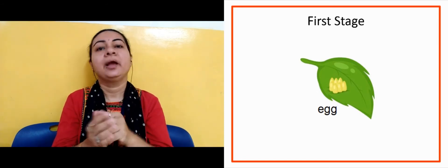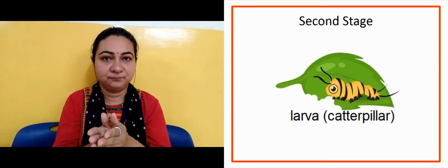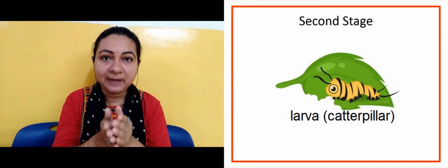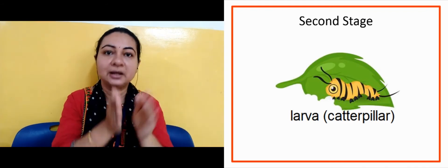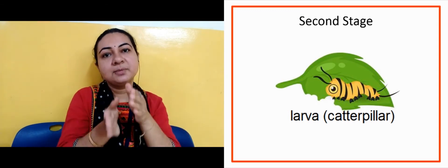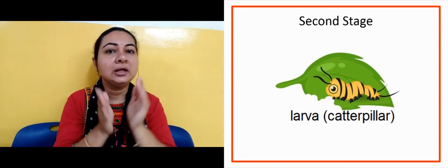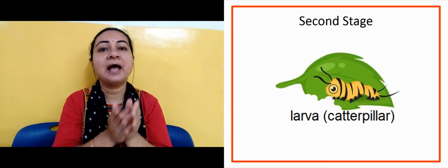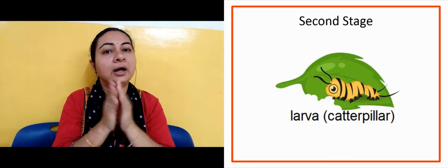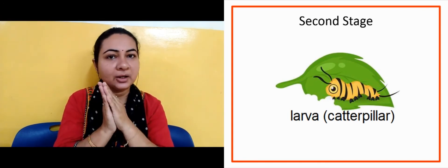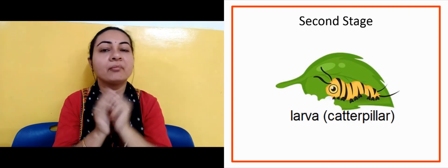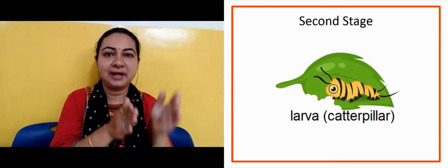The second stage — when the egg hatches, what comes out? It is the larva, also called a caterpillar. So the second stage is larva or caterpillar.